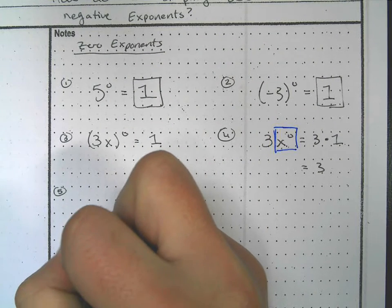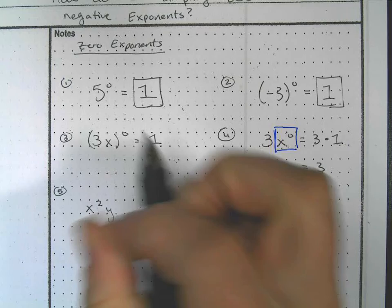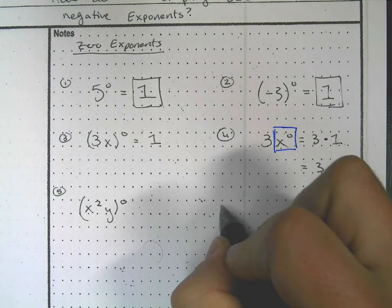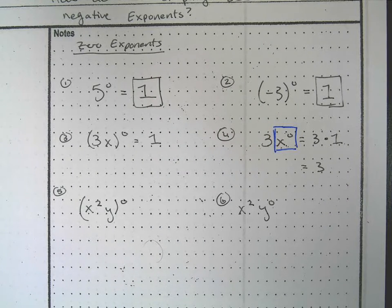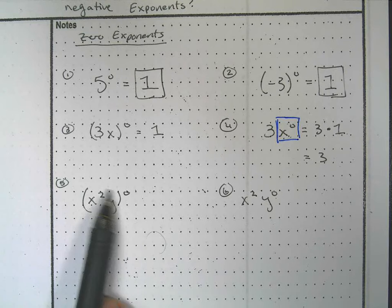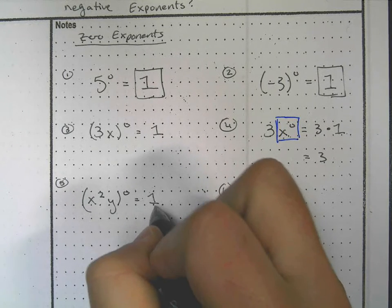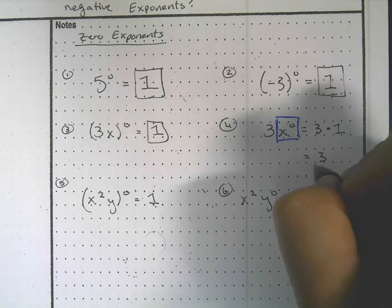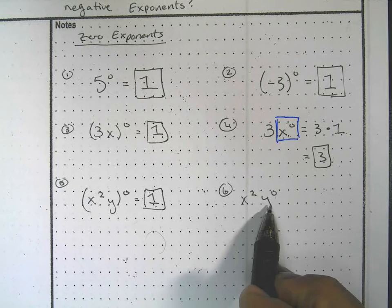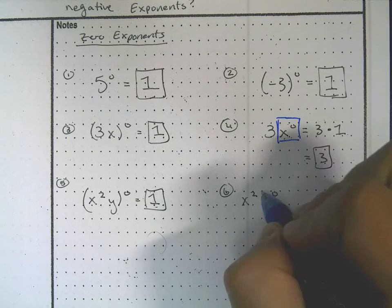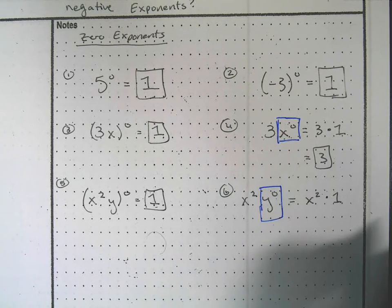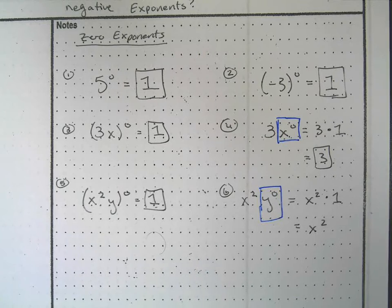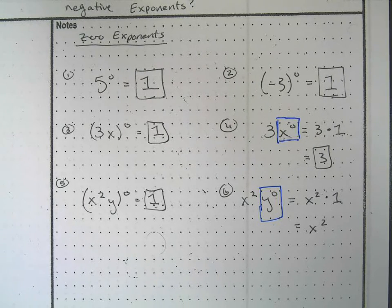Say we had (x²y) to the zero versus x²y to the zero — one has parentheses, one doesn't. On the first one, the entire thing is being raised to zero, so that equals one. On the second, only the y is being raised to the zero, so we get x² times one, which is just x². We should be very careful about where those parentheses are located.